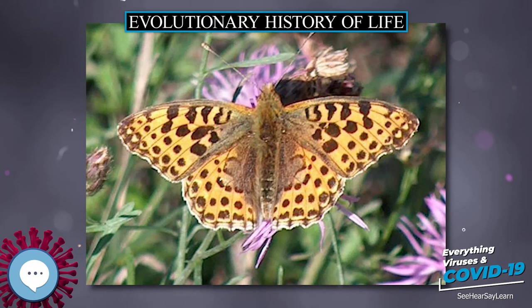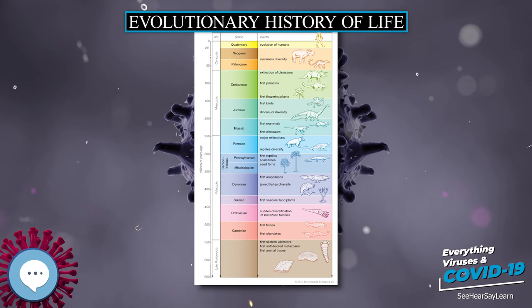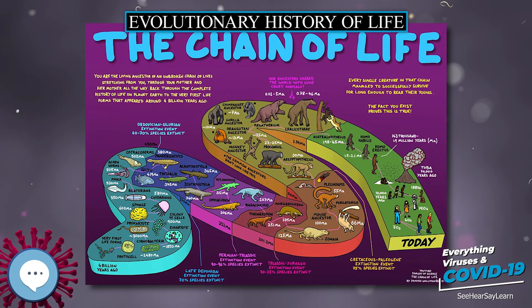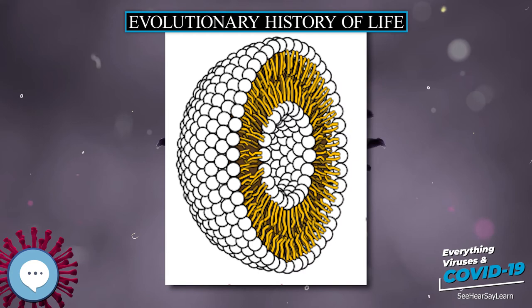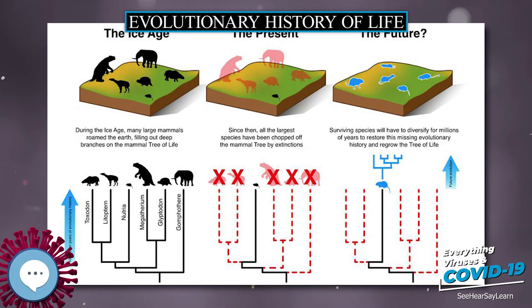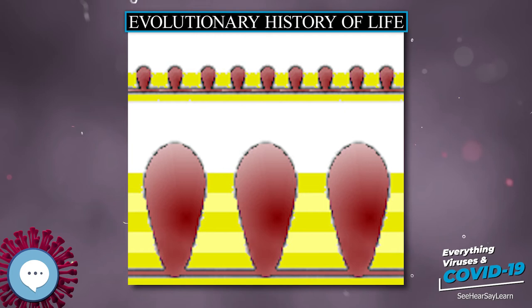There is a debate about when eukaryotes first appeared; the presence of steranes in Australian shales may indicate that eukaryotes were present 2.7 Ga. However, an analysis in 2008 concluded that these chemicals infiltrated the rocks less than 2.2 Ga and prove nothing about the origins of eukaryotes. Fossils of the algae Grypania have been reported in 1.85 billion-year-old rocks, originally dated to 2.1 Ga but later revised, and indicate that eukaryotes with organelles had already evolved. A diverse collection of fossil algae were found in rocks dated between 1.5 and 1.4 Ga; the earliest known fossils of fungi date from 1.43 Ga.